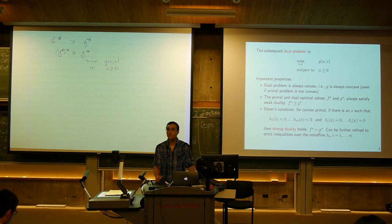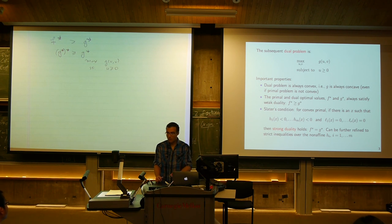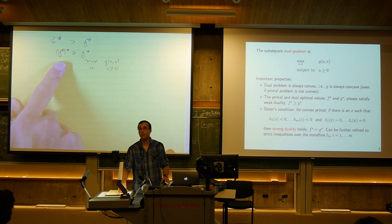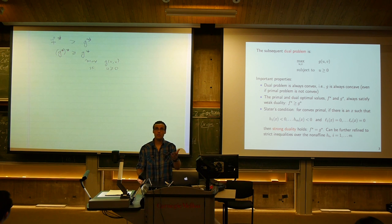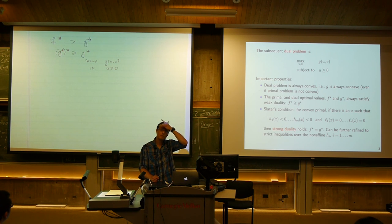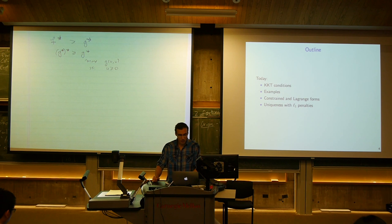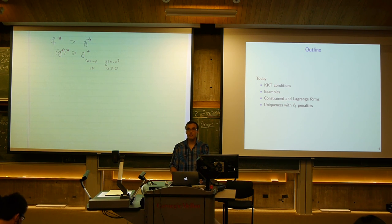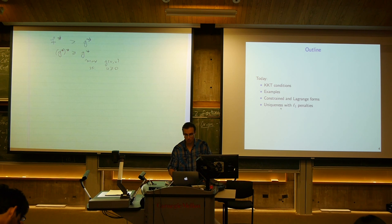There's a neat example in Boyd and Vandenberghe that constructs the dual of a non-convex problem with integer — even binary — variable constraints. It's a pretty neat example. Today we'll talk about the KKT conditions, go through a bunch of examples, address problems expressible in constrained and Lagrange form as seen in statistics and machine learning, and if time permits go through an application proving something interesting.